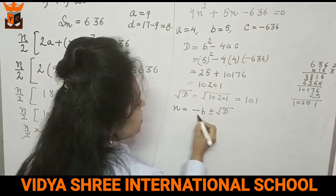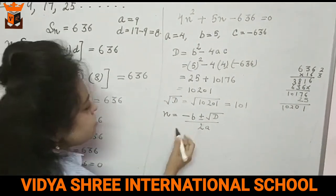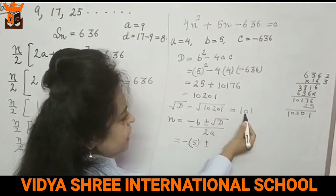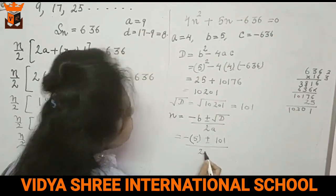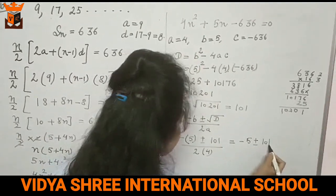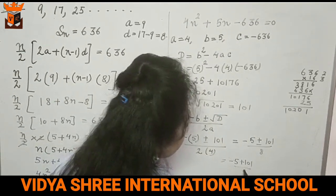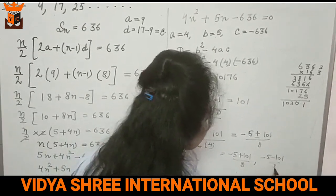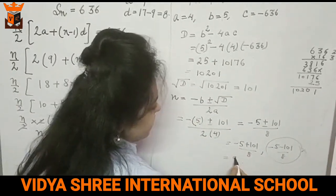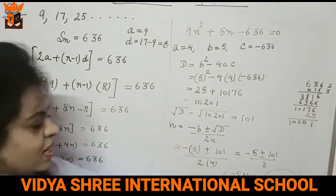So what is the value of n now? Minus b plus minus root d upon 2a. You are already aware about this quadratic formula. So put the values. Value of b is 5, plus minus square root of d is 101, divided by 2 times a, which is 4. So minus 5 plus minus 101 by 8. We will make 2 equations, one with plus sign and one with minus sign. Number of terms cannot be negative, so we will reject it. So this is 101 minus 5, 96 by 8. So the answer is 12. The number of terms are 12.